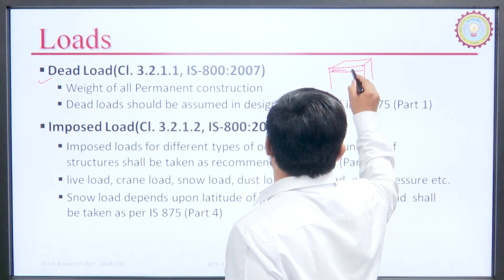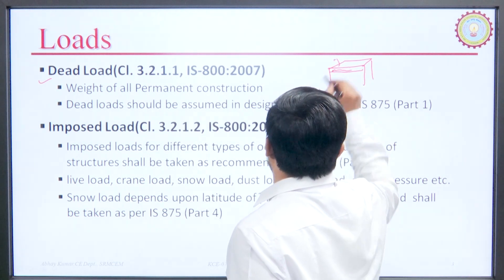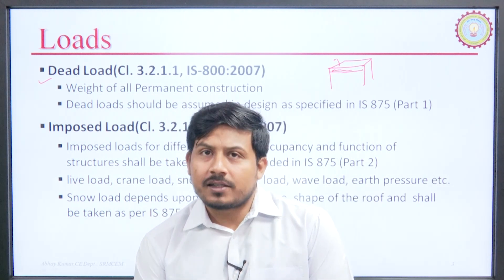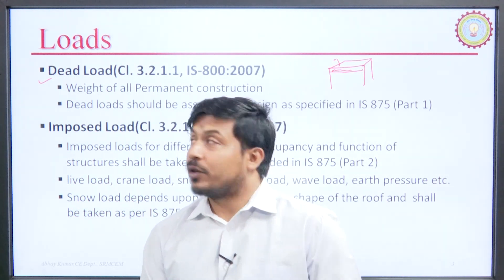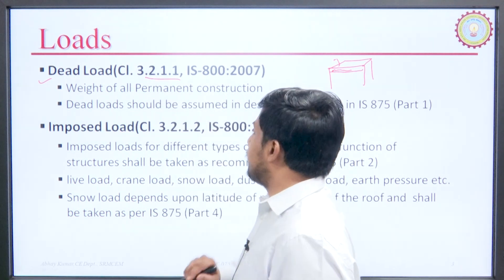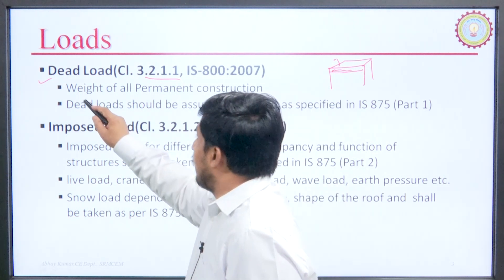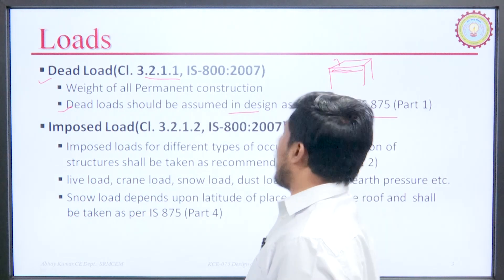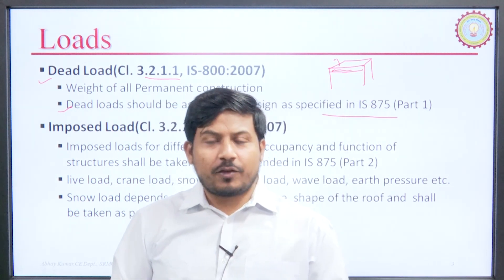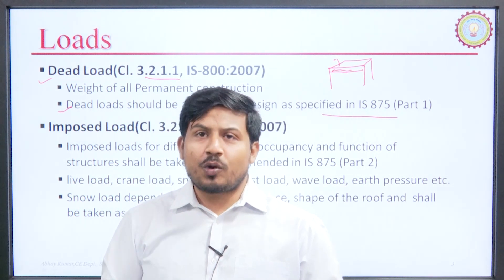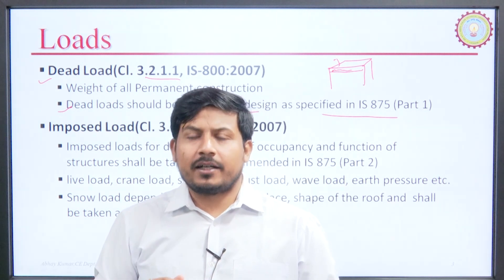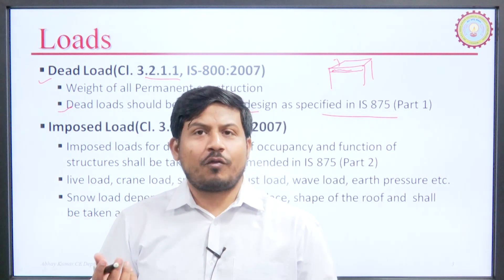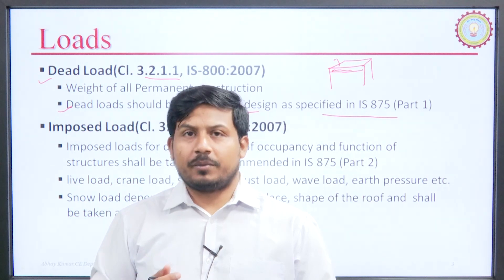The weight of this beam and the weight of this slab will come under the category of dead load. Our IS code says in clause number 3.2.1.1 that dead load should be assumed in design as specified in IS 875 Part 1, which is a code entirely dedicated to the calculation and consideration of dead loads of various construction materials.